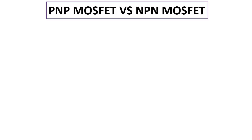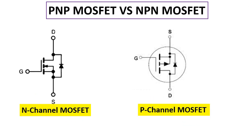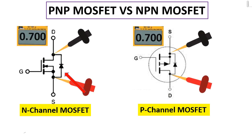Now let's see the difference between p-channel (PTR) and n-channel (NTR) MOSFETs. For the NTR MOSFET, there is an internal diode between drain and source, and the same is true for the PTR MOSFET. The arrow for the NTR MOSFET points towards the gate, and for the PTR MOSFET the arrow points towards the source.